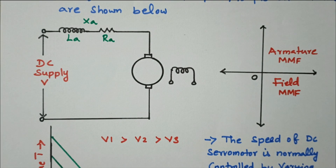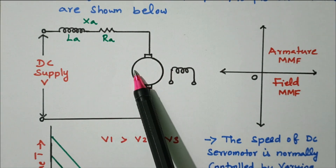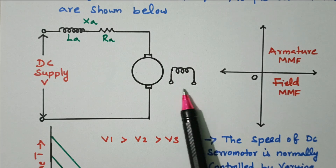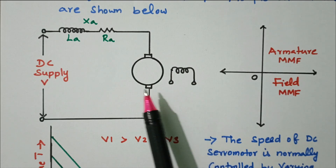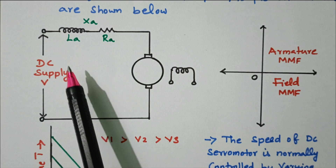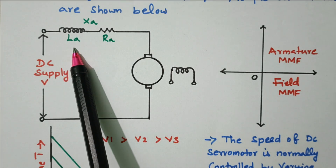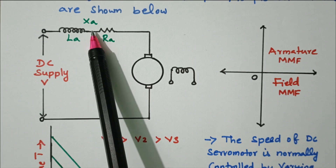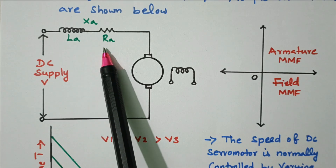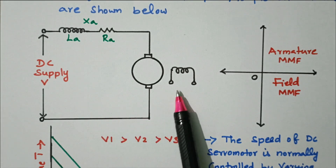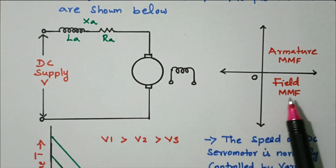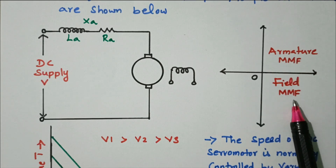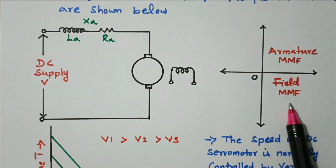The diagram is given. The armature is the rotating part and the field is separately available, with excitation given separately. LA is the armature inductance, RA is the armature resistance, and XI is the armature impedance — LA plus RA gives XI. It is excited separately. The important thing is that the armature MMF and field MMF are in quadrature, that is, 90 degrees.